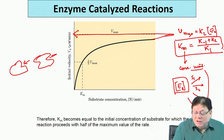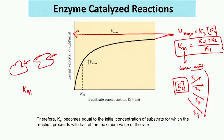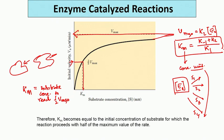Km is nothing but equal to the substrate concentration required to reach half of Vmax. Once you know Vmax, you find half of Vmax, draw a line there, and see what value it corresponds to on the x-axis — that value of S is equal to Km. That is how you determine Km.